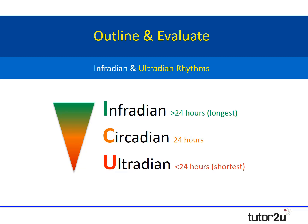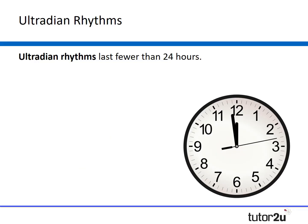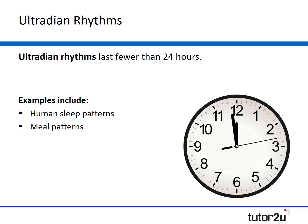Let's now turn our attention to ultradian rhythms, which are those that last less than 24 hours. Ultradian rhythms can be found in patterns of human sleep. Another good example is human meal patterns, because we tend to eat three times a day on average and appetite rises and falls in between food consumption.